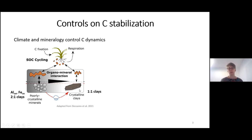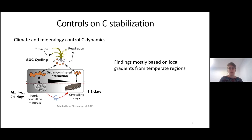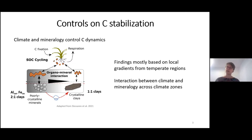In more highly weathered soils we often find a lot of crystalline clays like kaolinite — one-to-one clay minerals — and due to their structure they are thought to interact less with organic material and therefore stabilize less carbon. However, these findings are mostly based on local gradient studies from temperate regions, and it is not clear if these findings also hold on a much broader scale and for subtropical and tropical soils. Also, given how gradient studies are usually designed, it is not easy to look at the interaction between climate and mineralogy across different climate zones.